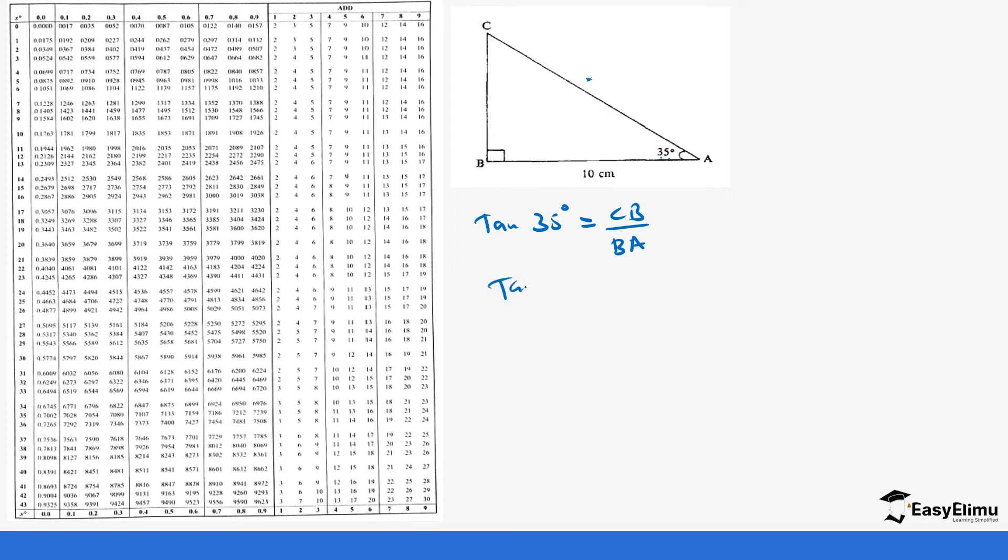This is tan 35 degrees equals CB over 10. So you multiply by 10 both sides, we get 10 times tan 35 equals CB. We are looking for CB but now we can do so by scale drawing or using the tables. If we use the tables we are going to read the tan of 35.